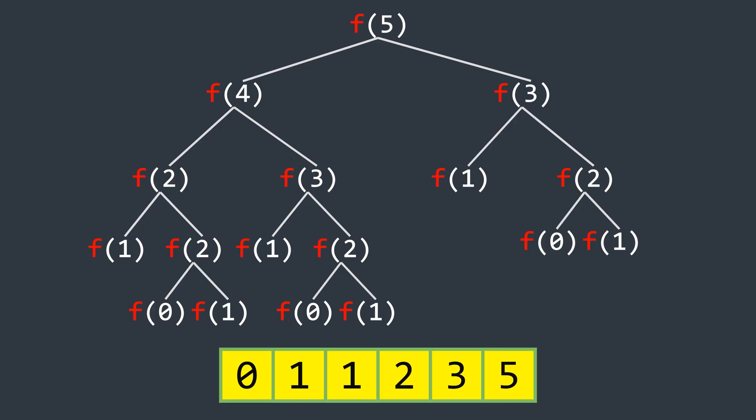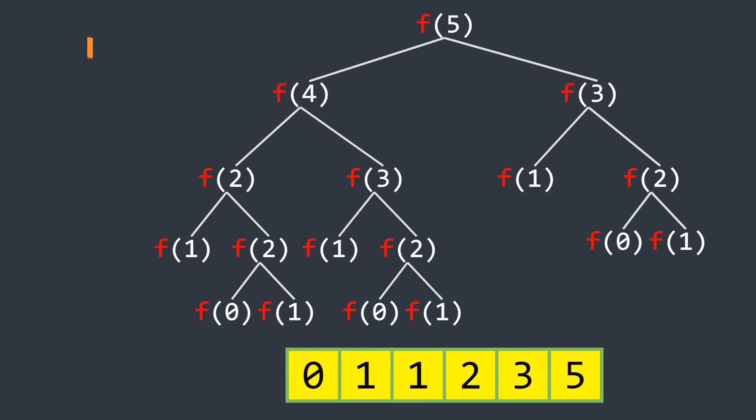Keep one thing in mind that we started from f of 5 and worked our way down to the base case, and then we used the stored values to compute larger values. And this is why memoization follows a top-down approach.